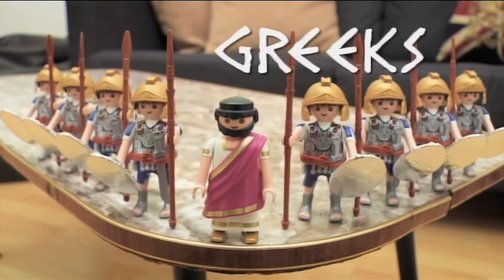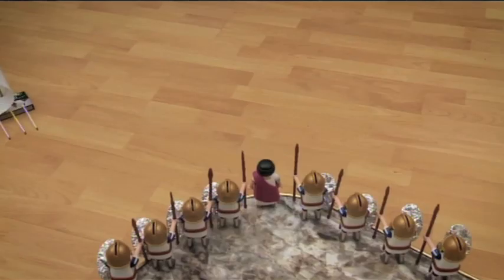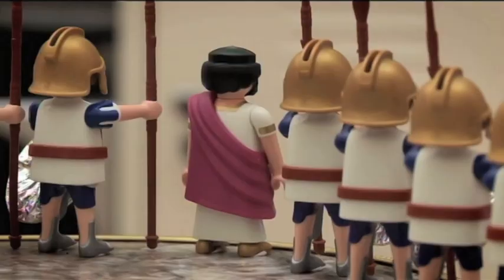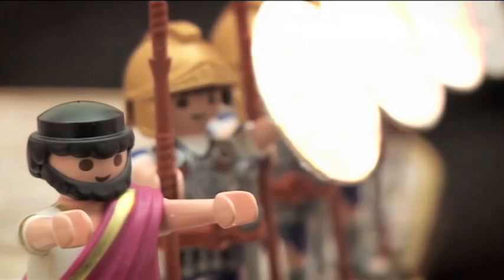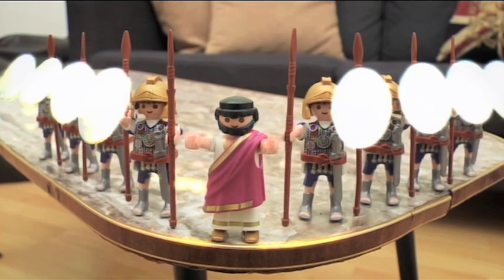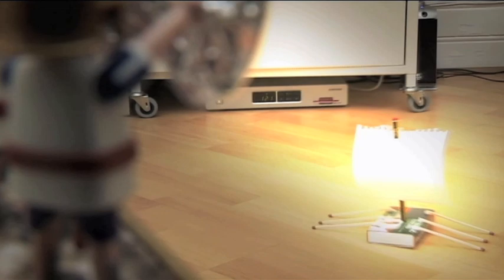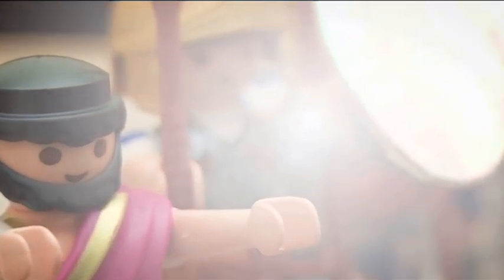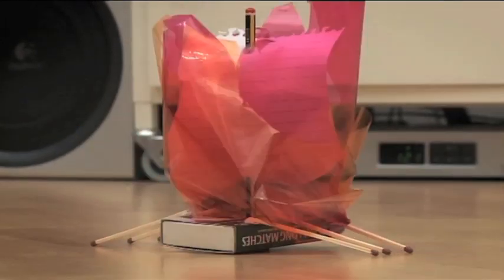Archimedes was a very clever guy who 2,000 years ago is said to have defeated the Roman navy using mirrors and the power of the sun. Legend says he created a death ray from highly polished shields, focusing sunlight onto the approaching ships, causing them to burst into flames and sending the entire fleet to the bottom of the sea.